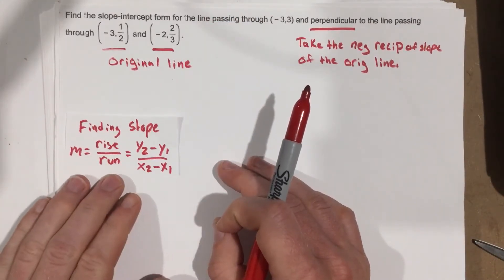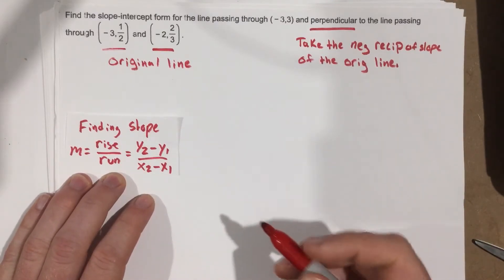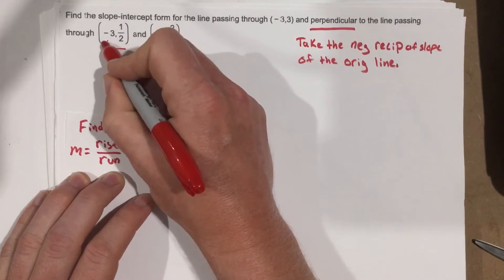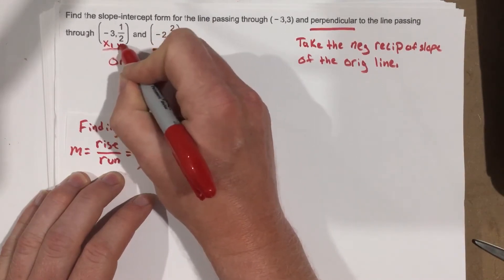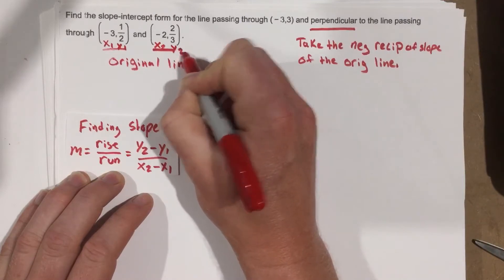So let's go ahead and find the slope. Now we know we can use this equation, which is rise over run, which is y₂ minus y₁ over x₂ minus x₁. I just need to label these. This is x₁, this is y₁, this is x₂, and this is y₂.